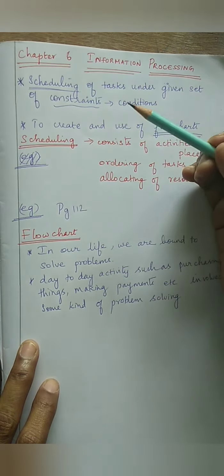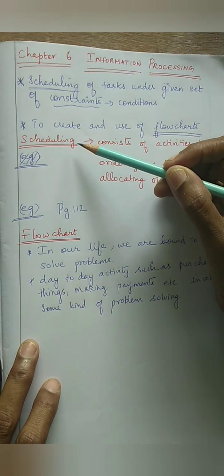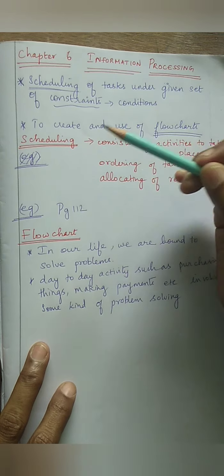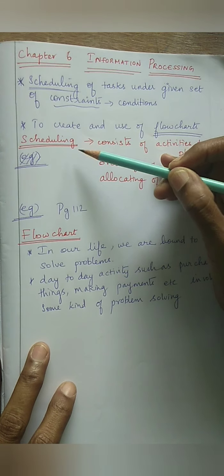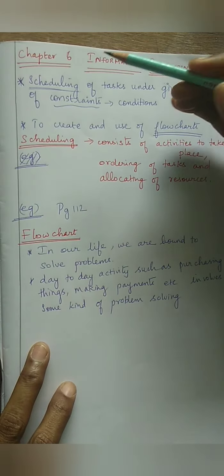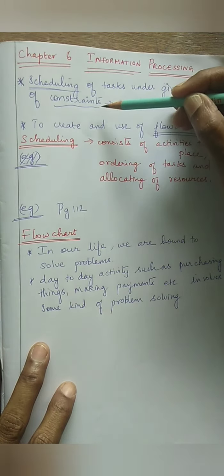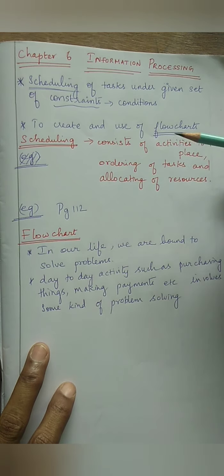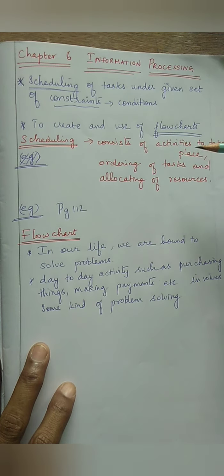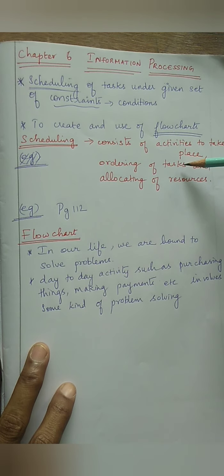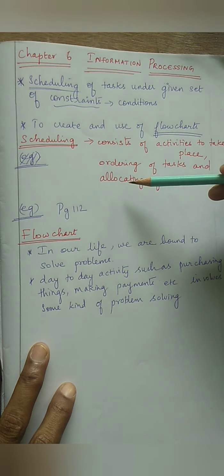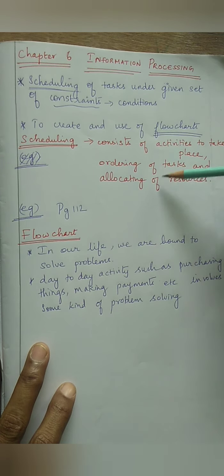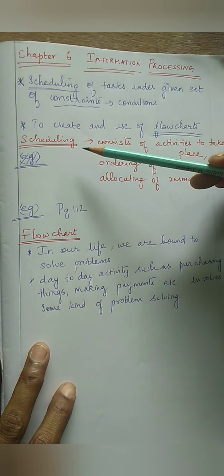Scheduling - you all know what scheduling means. Here, scheduling is dependent wholly on some particular task or events, and this task or events is being given under certain constraints. Constraints is nothing but conditions. So the definition of scheduling consists of activities to take place, we are going to order those particular tasks or activities, and the third thing we are going to allocate some resources.